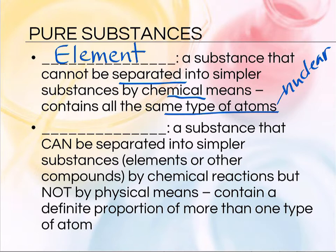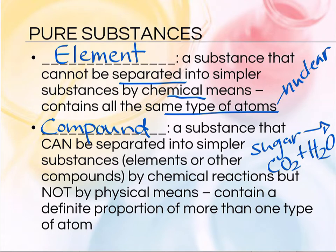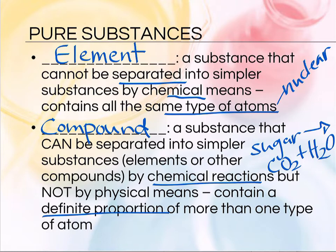However, if you have a compound, then a compound could be separated chemically into the components that it's made from. For example, sugar gets separated during the process of respiration into carbon dioxide and water and, of course, energy for your body. So sugar can be broken down into simpler things by a chemical reaction, but not by a physical reaction. If I melt sugar, it's still going to be sugar and the chemical bonds haven't been rearranged. So a compound has to have a definite proportion of more than one type of atom — we have to be able to break it apart into the little pieces that make it up without breaking atoms apart.